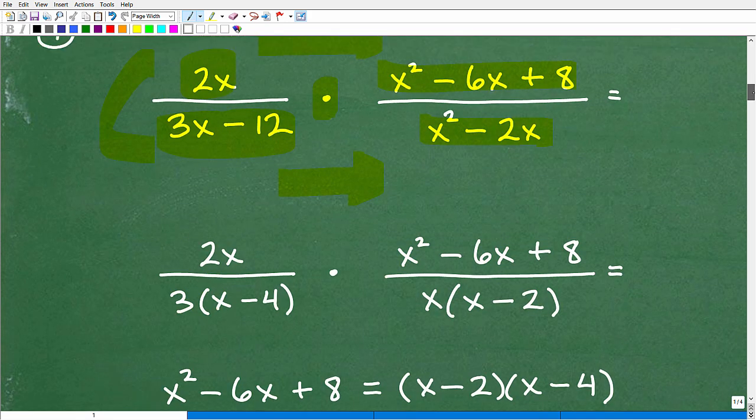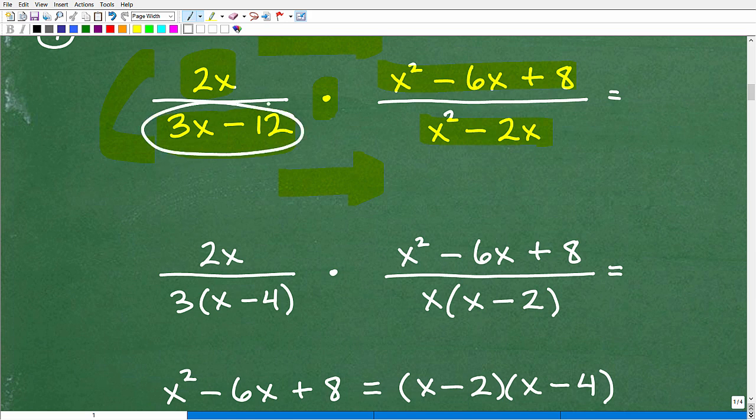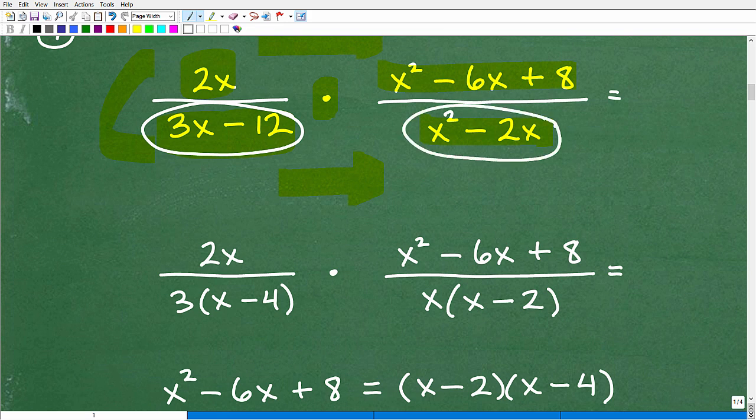Let's start with the easy stuff. This 3x minus 12 and this x squared minus 2x are the easiest things to factor right now. We'll get to this trinomial in a second. Hopefully you can factor out the greatest common factor here. 3x minus 12, that's going to be 3 times x minus 4. Here we have x squared minus 2x, we can factor out x. So that's going to be x times x minus 2. If you're like a little bit shaky on this, you've got to go back and do some significant review on factoring. If you're able to do these like no problem, give yourself a little A plus and a star right now.